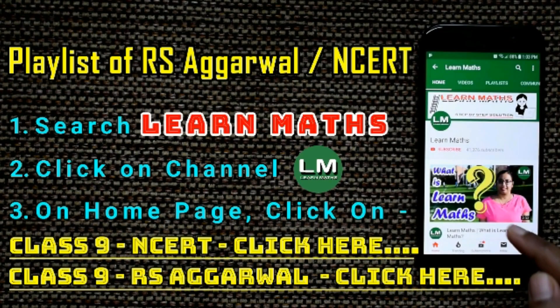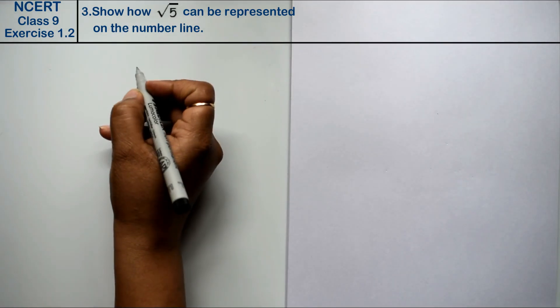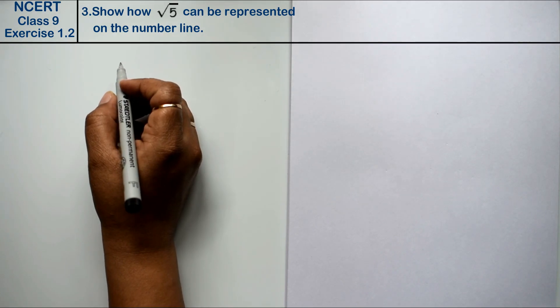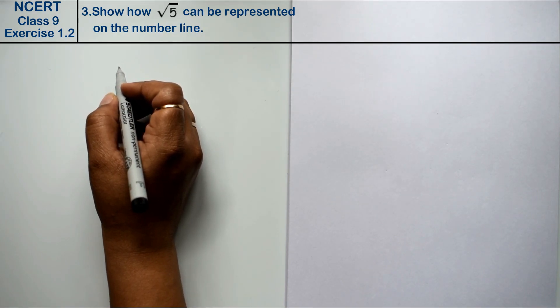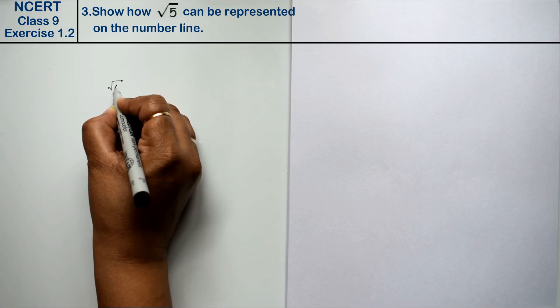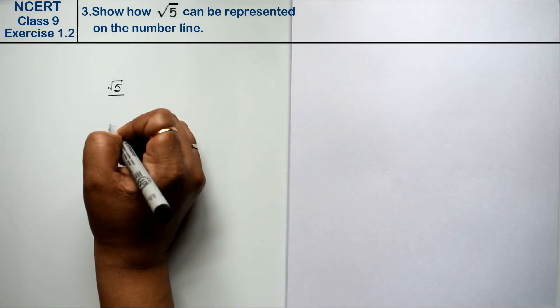Let's do question number 3 of exercise 1.2, that is number system. Question number 3 is show that root 5 can be represented on a number line. Friends, we have to represent root 5 on a number line.